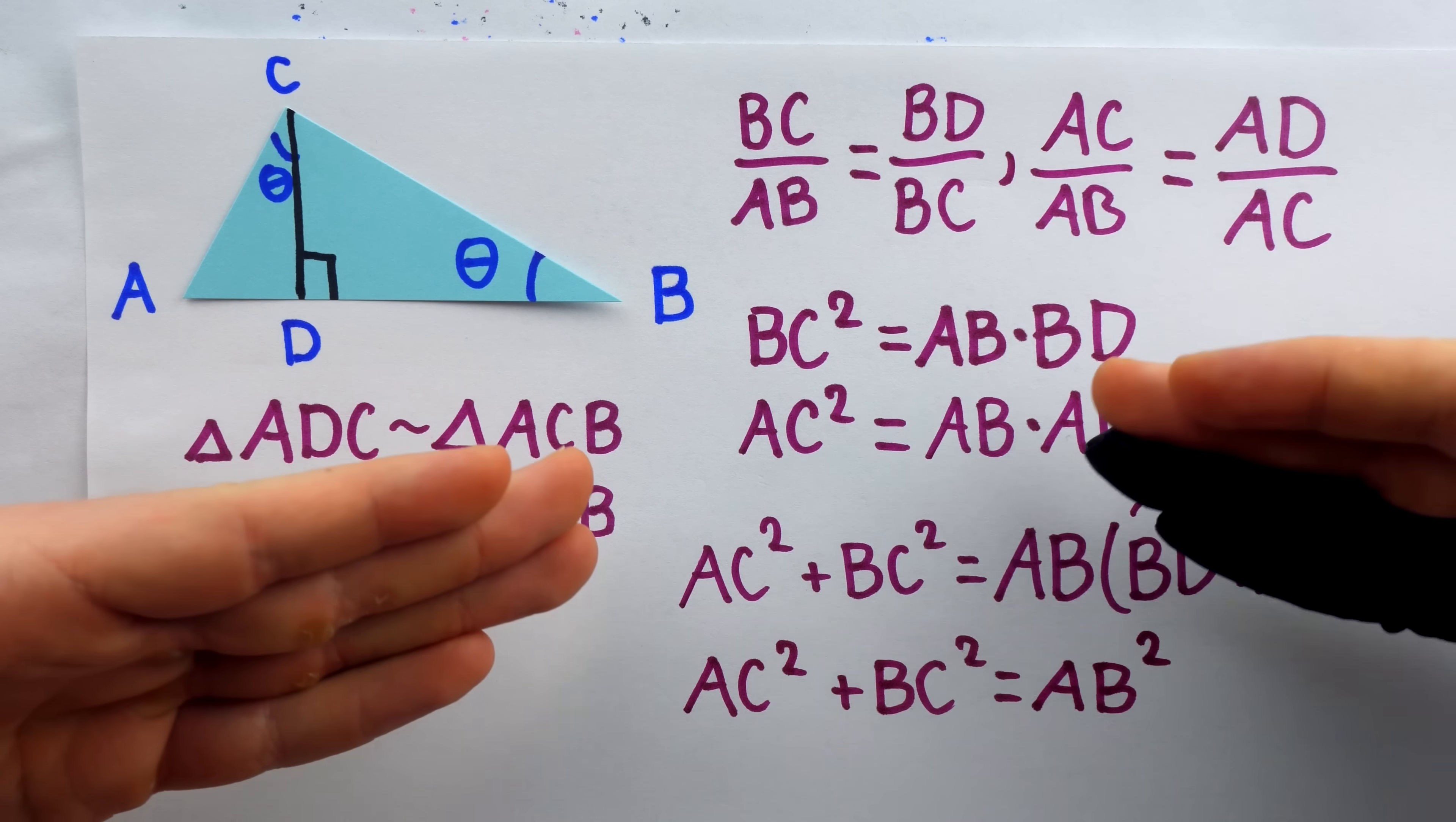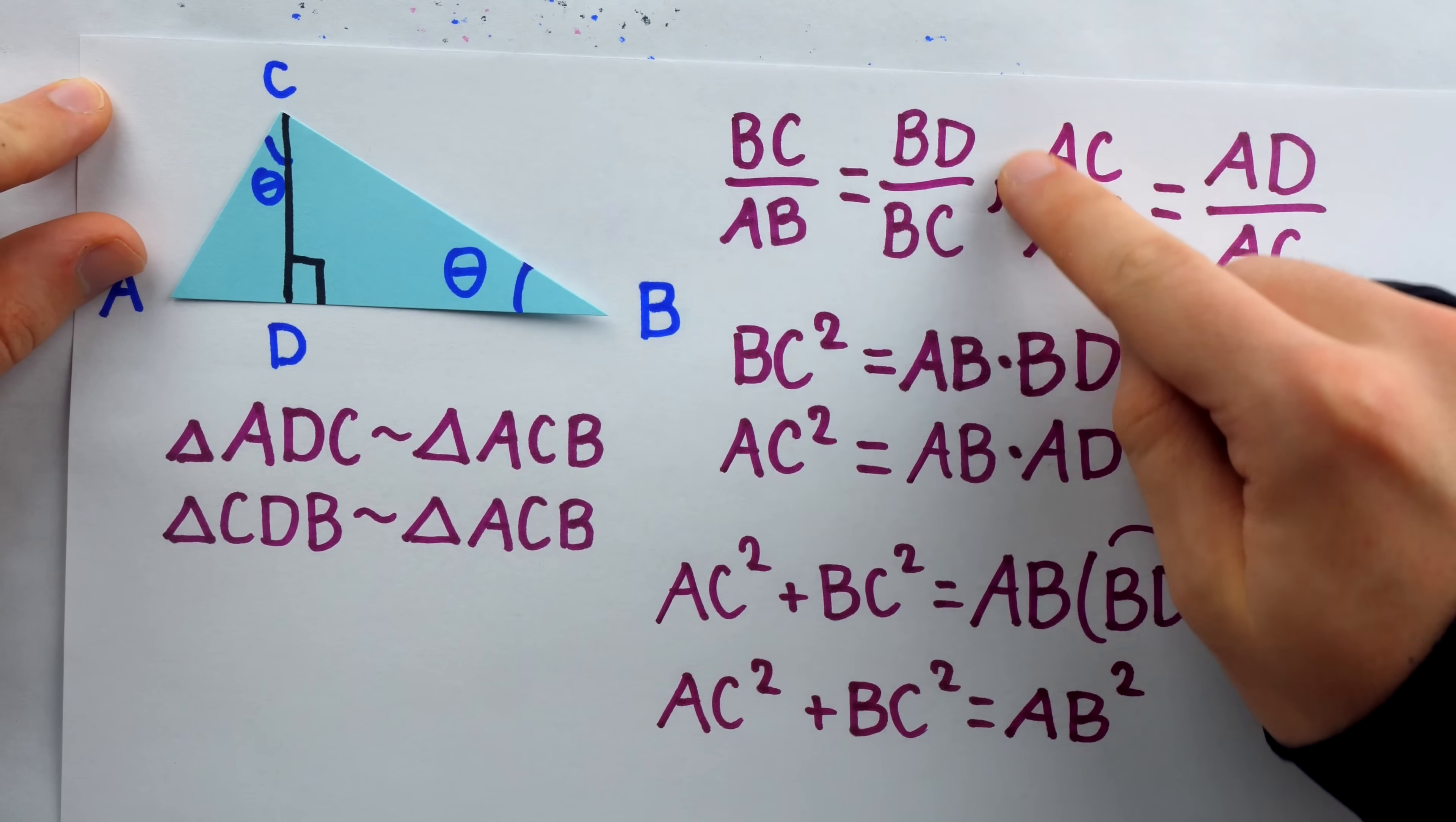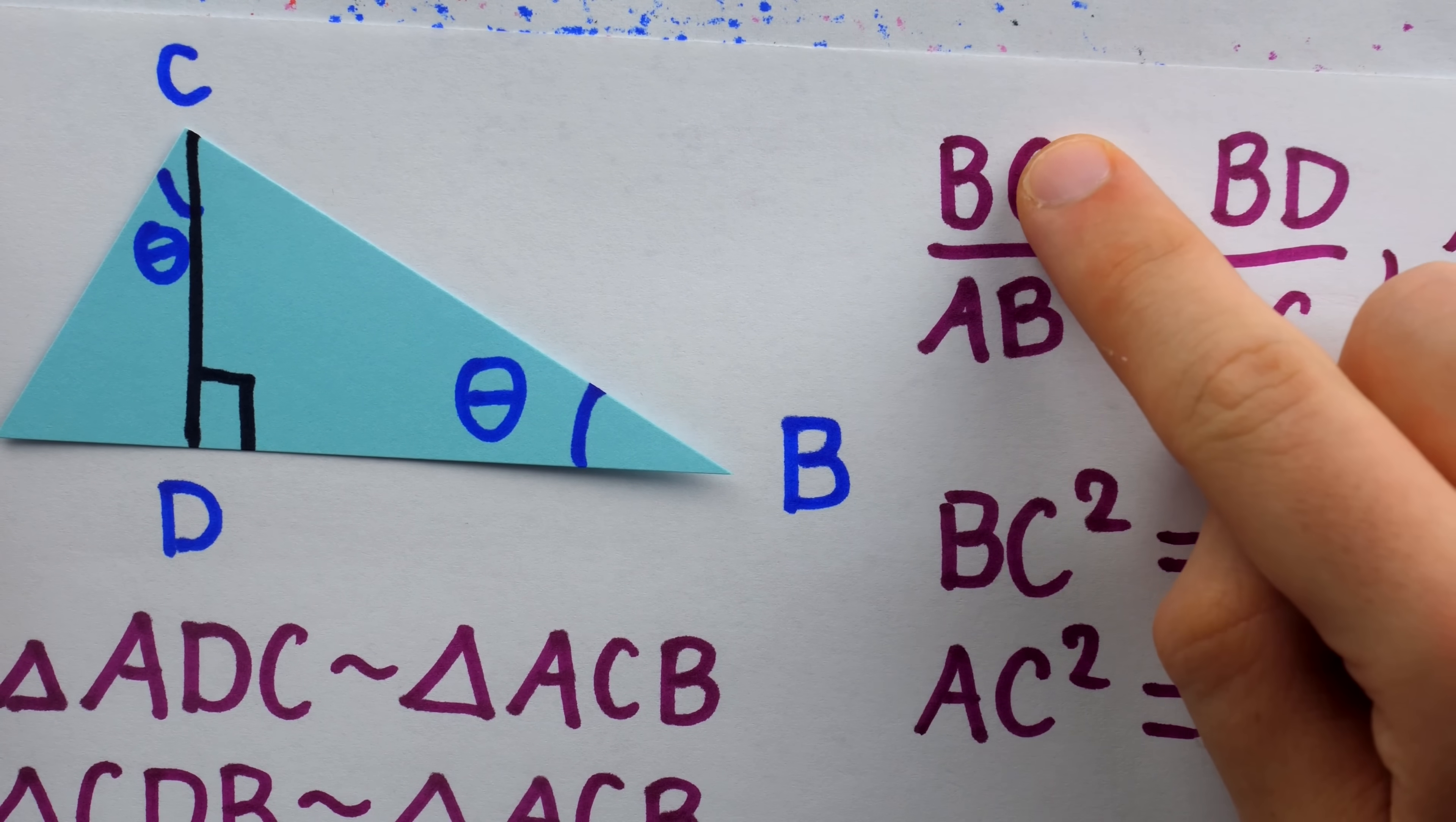The sum of the squares of the legs, AC squared plus BC squared, is equal to the square of the hypotenuse. In this case, AB squared. That's a very simple proof. We construct one altitude, argue similarity, and then do a little bit of algebra. Some may argue that this is actually a bit of a trigonometric proof of the Pythagorean theorem.